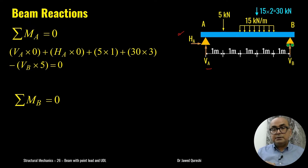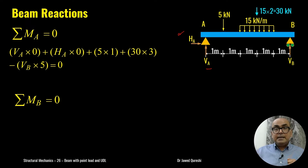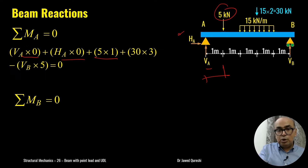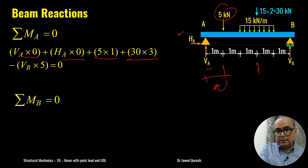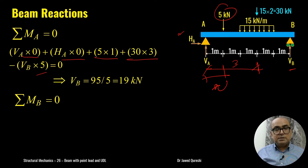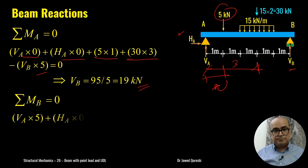Taking ΣM at A = 0: Va and Ha create no moment (zero perpendicular distance). The 5 kN load is 1 m from A — clockwise, so positive: 5×1. The 30 kN UDL resultant acts 3 m from A — clockwise, so positive: 30×3. Vb acts 5 m from A — anti-clockwise, so negative: −Vb×5. Solving gives Vb = 19 kN.